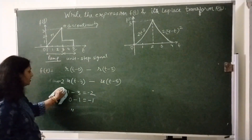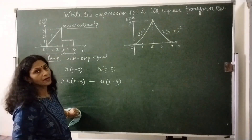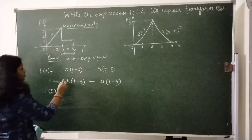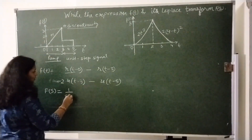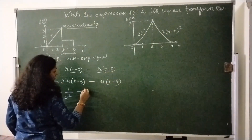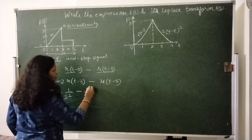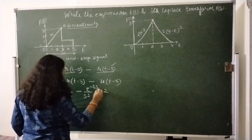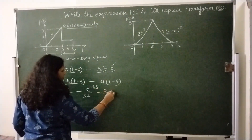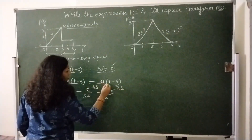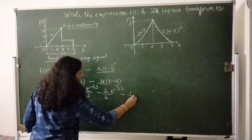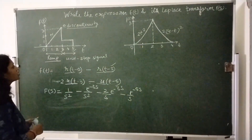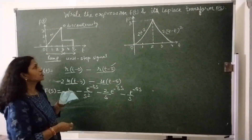This is the expression f(t) for the unit step and ramp signal. Now we can write the Laplace transform for these two. R(t) gives 1/s². R(t minus 3) gives (1/s²)·e^(−3s) because of the time shift. Minus 2·u(t minus 3) gives (1/s)·e^(−3s). And u(t minus 5) gives (1/s)·e^(−5s). This is the Laplace transform as well as the expression in f(t).